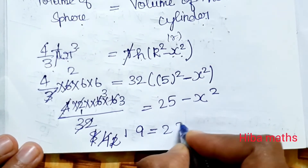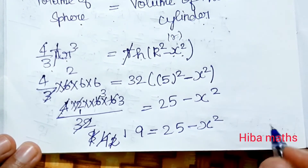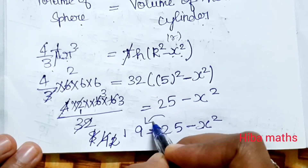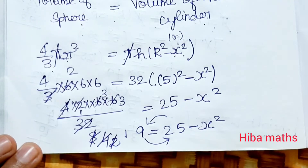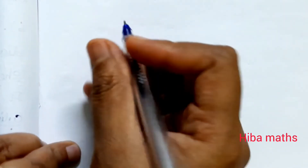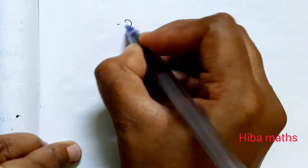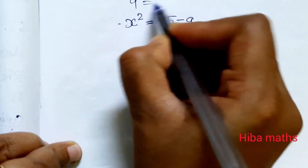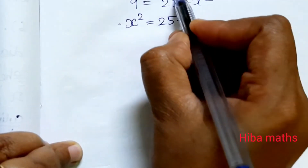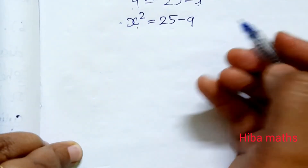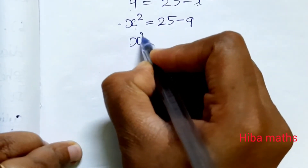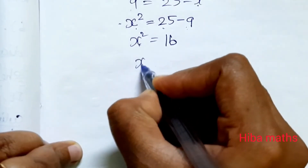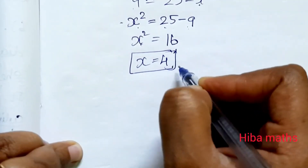Solving the equation: 9 = 25 − x². Rearranging, x² = 25 − 9, so x² = 16. Therefore x = 4. The internal radius is 4 centimeters.